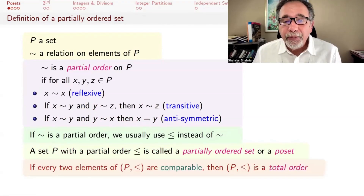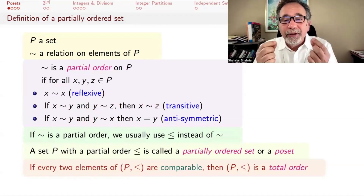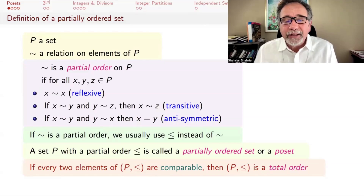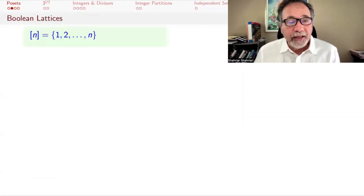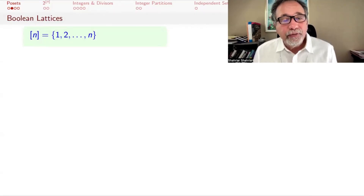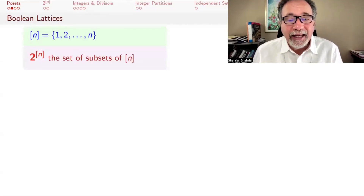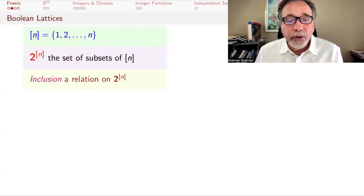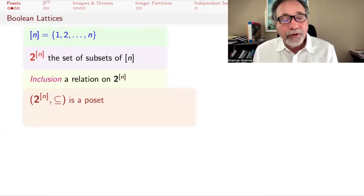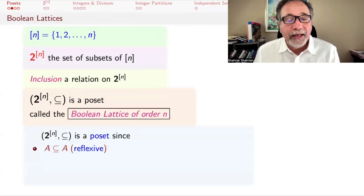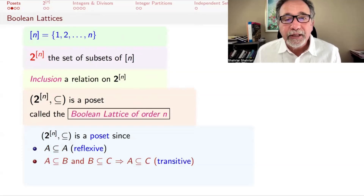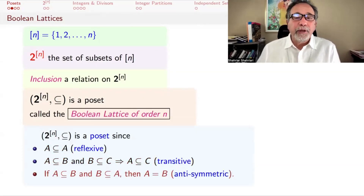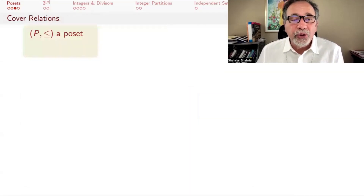A set that has a partial order is called a partially ordered set, or a poset for short. If every two elements of the poset are comparable — meaning for any two elements, either X ≤ Y or Y ≤ X — then you actually have a total order. The prototypical example is the Boolean lattice. If you have a set with N elements, bracket N stands for {1, ..., N}. Then 2^[N] is the set of subsets of [N], and inclusion is the relation. This is a poset called the Boolean lattice of order N, since every subset is a subset of itself, inclusion is transitive, and if A ⊆ B and B ⊆ A then A = B.